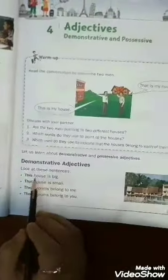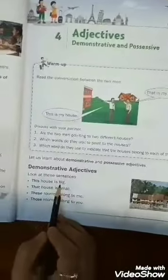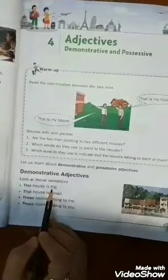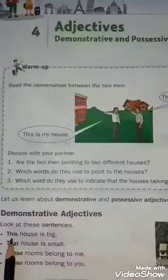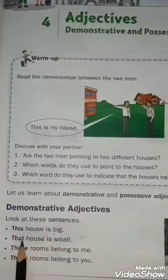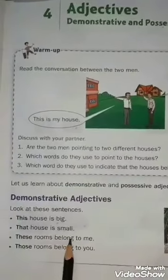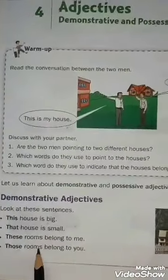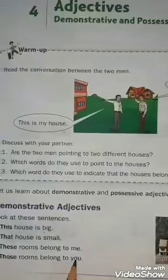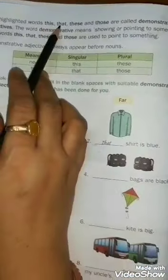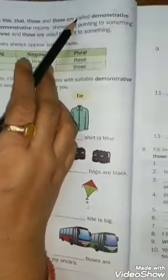Look at these sentences: 'This house is big. That house is small. These rooms belong to me. Those rooms belong to you.' The highlighted words this, that, these, and those are called demonstrative adjectives.